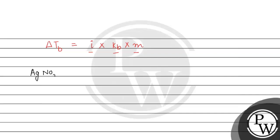AgNO3 gives Ag positive plus NO3 negative. So here i is 2, and m given is 0.1 molal. kb is 0.5 Kelvin kg per mol. So this will be equal to 2 multiply by 0.5 multiply by 0.1, which gives 0.1 degree Celsius.